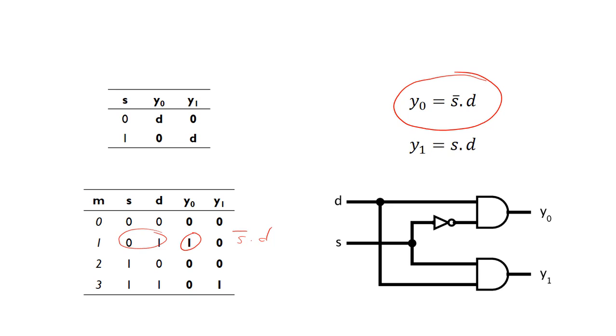y1 is a completely separate output, so we look at this column. There's one row in which the output is a 1, and that's s and d. So this gives the expression for y1.